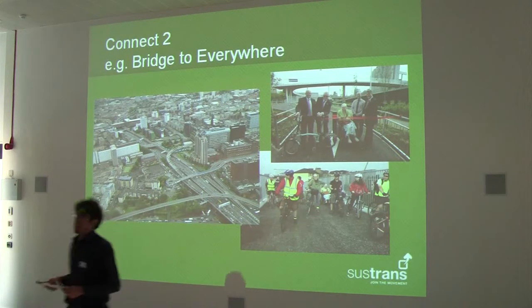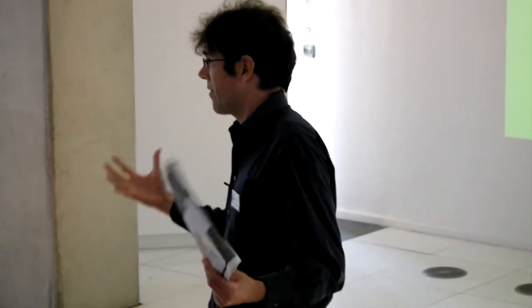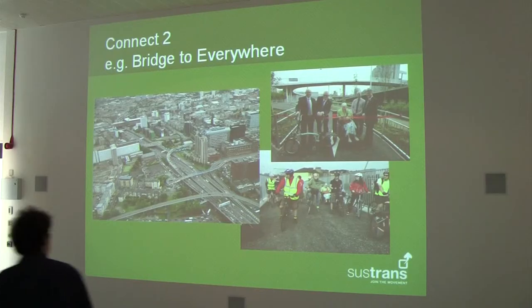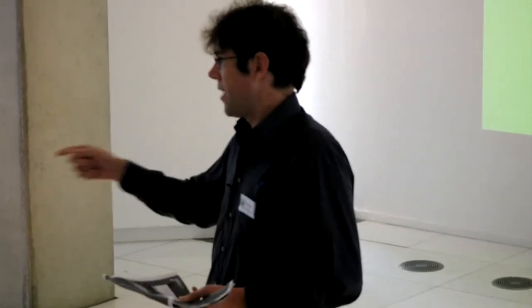Earlier on somebody mentioned the bridge to nowhere — or what we're calling the bridge to everywhere — in Glasgow. It's the bridge in the middle here, which when the motorway system was built in Glasgow was never finished. There's a project called Connect2 which has 79 schemes like this across the whole of the UK, three or four of which are in Scotland. This one has made the most press. It's doing really the same thing as the Community Links Programme — making a very useful link which makes walking and cycling much more possible.